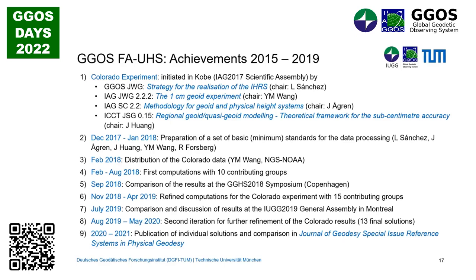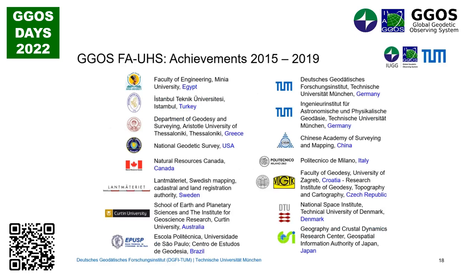We compared the results at a meeting in Copenhagen and got differences up to one meter and many decimeters. We had to refine the set of basic standards because what we had prepared was not enough. Then a first iteration of the Colorado experiment was started. By that time we had 50 contributions. In July 2019 in Montreal, we compared the results, then made a new iteration. In May 2020 we decided on the final results, which were compared in two different papers: one concentrating on geoid comparison and the other on potential determination.